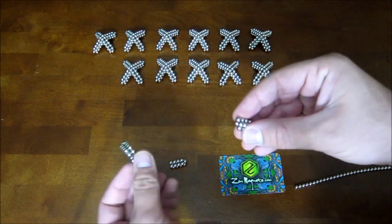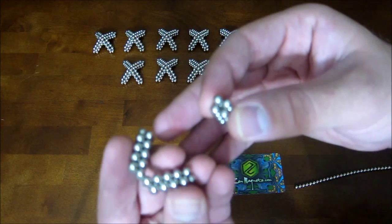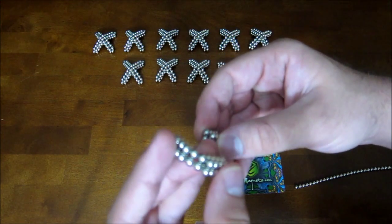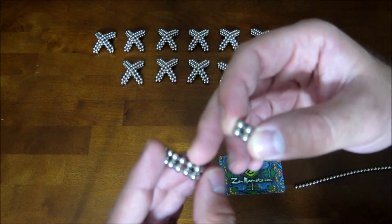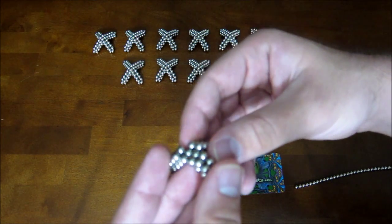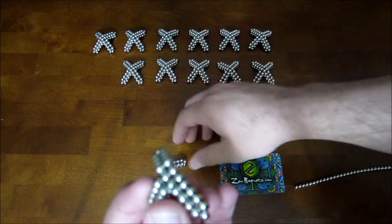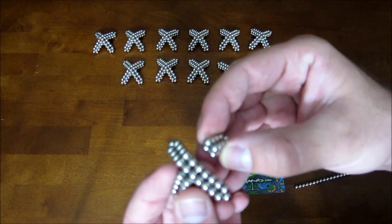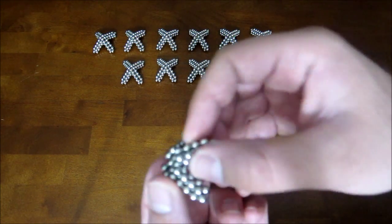Then what you want to do is pick this up and let it bend to about that point. And then you're going to attach that to these two magnets here. Just like that. And then also do that to the other side with this other one. And you end up with this.